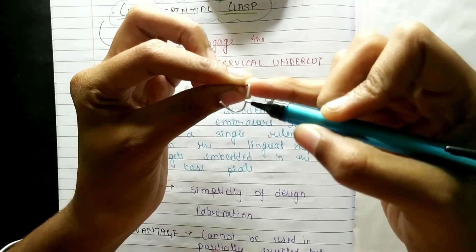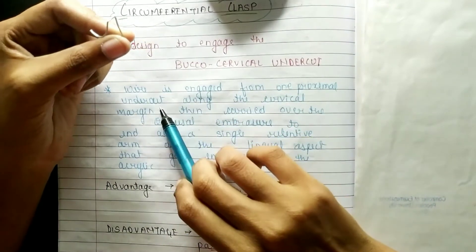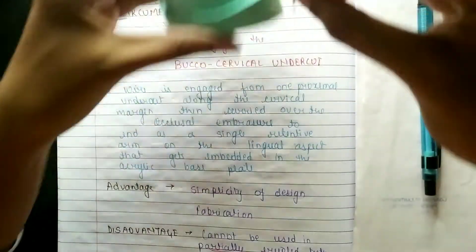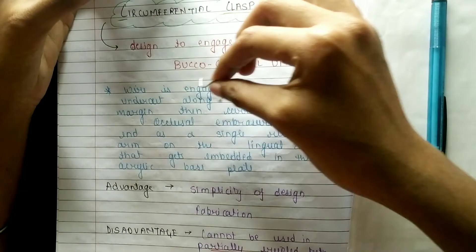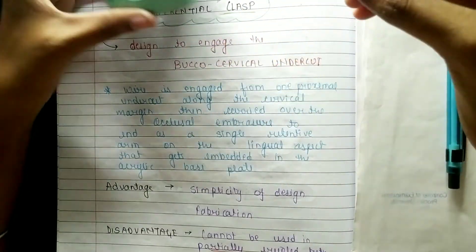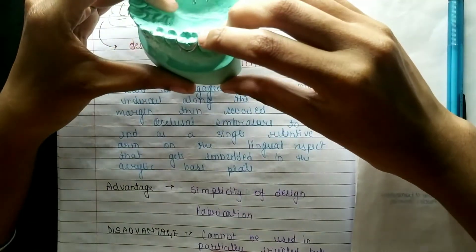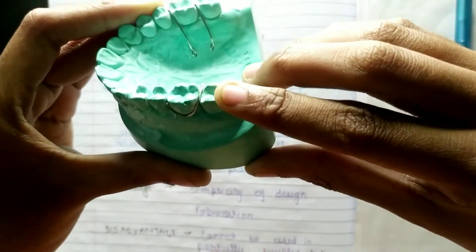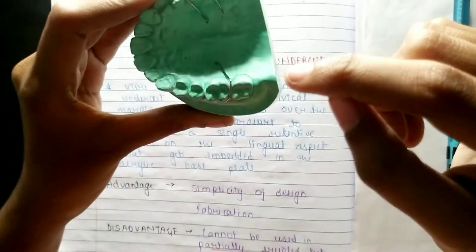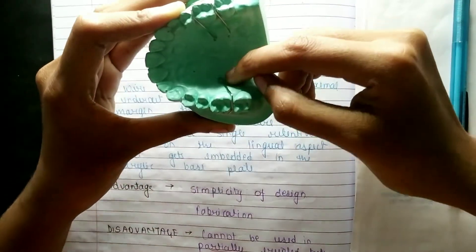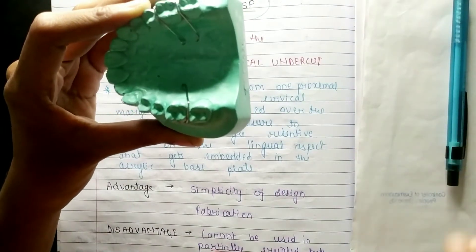Here there will be a retentive arm which will adapt. What is happening is that the wire is engaged from one proximal undercut along the cervical margin — this is your cervical margin — then carried over the occlusal embrasure. We have placed it here; this is the cervical margin and this is the occlusal embrasure. It ends as a single retentive arm on the lingual aspect.